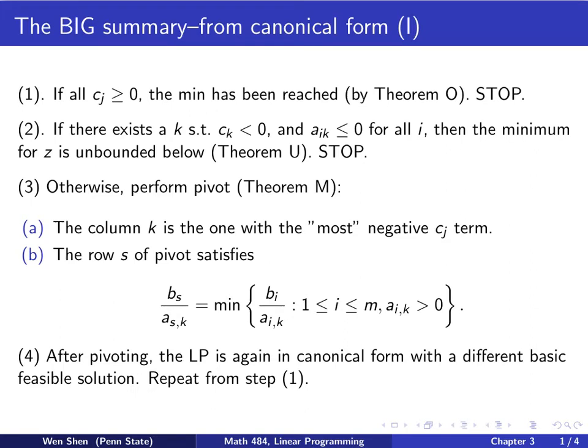And now you go back to step one and repeat. The process might have to be repeated once, twice, or multiple times until you stop either here or there. Then you have found the minimum or you conclude the minimum is unbounded.